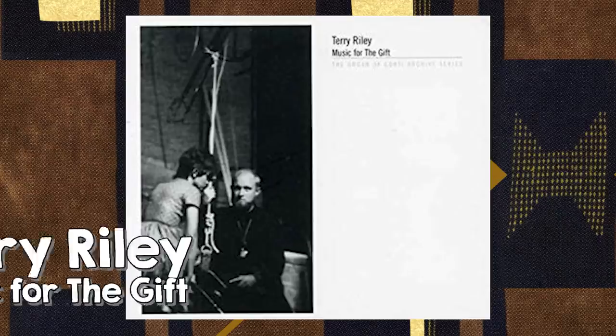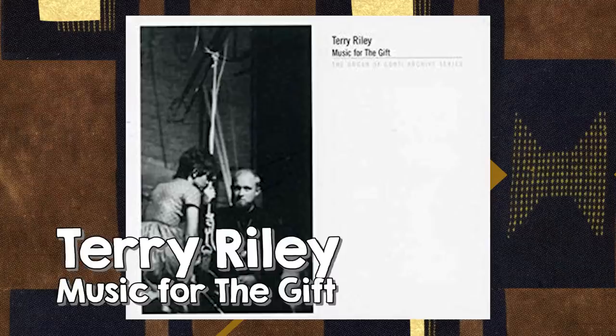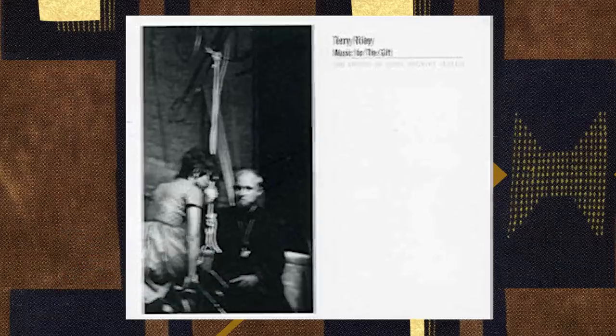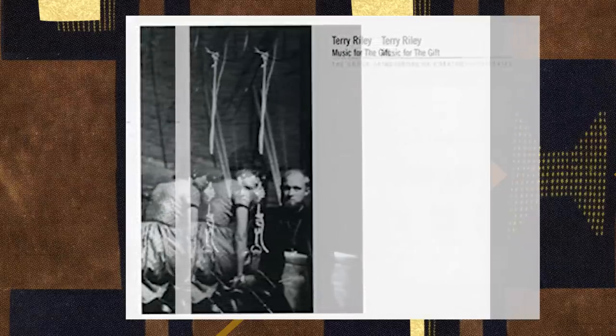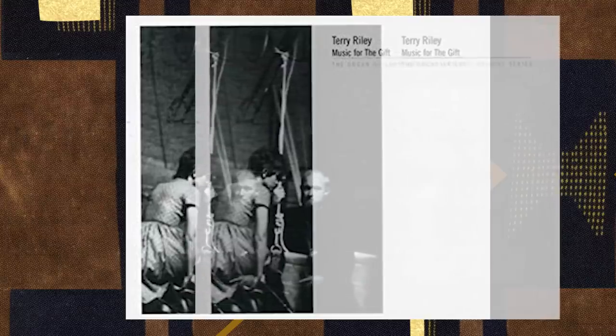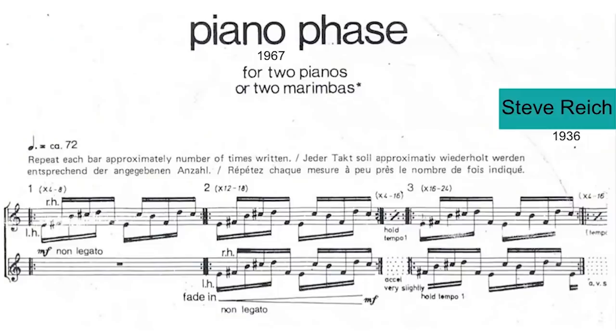This is Terry Riley's music for The Gift from 1963, where he effectively sampled a Chet Baker recording and looped it in a phasing pattern where one version of the recording gradually shifts out of sync with another. But it was Steve Reich, the father of American minimalism, who was one of the first composers to transfer these techniques developed with tape machines into pieces for live performance. Here's his piece Piano Phase, where two pianists gradually slip gears.